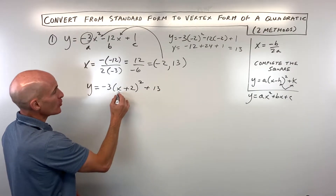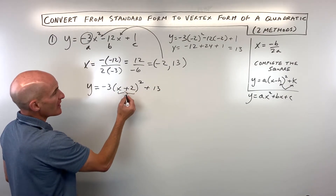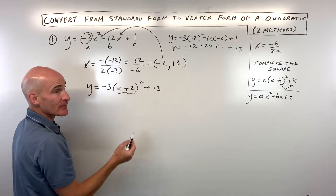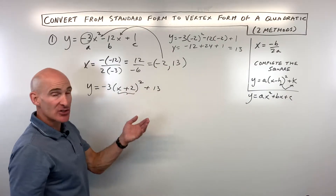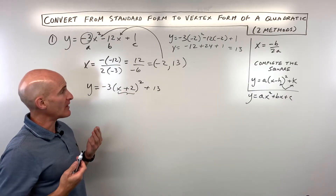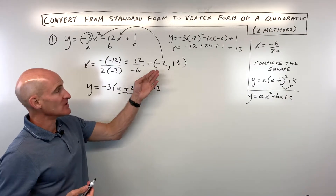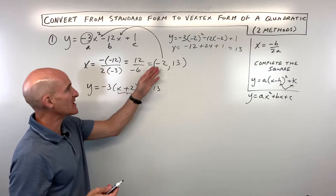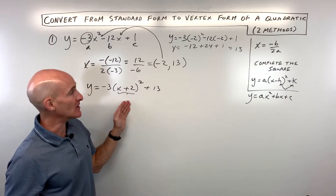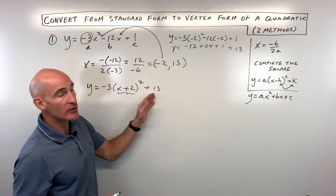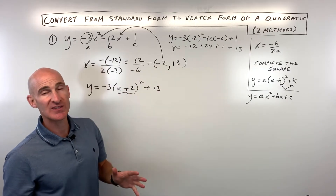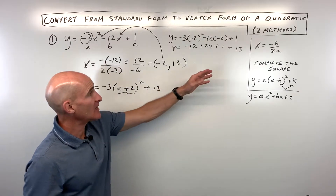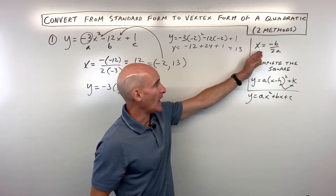One thing to notice is that the number grouped with x has the opposite effect on the graph. The plus 2 will shift the graph left two — you can see the vertex is at negative 2, so the signs are going to be opposite. The k value, the y-coordinate of the vertex, will be the same. That's using the negative b over 2a method.